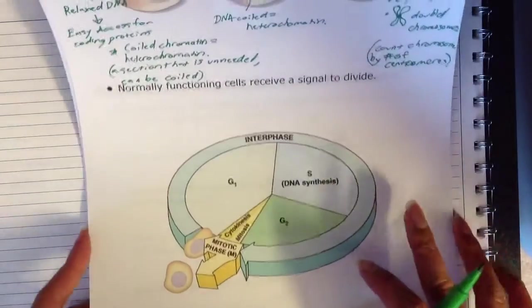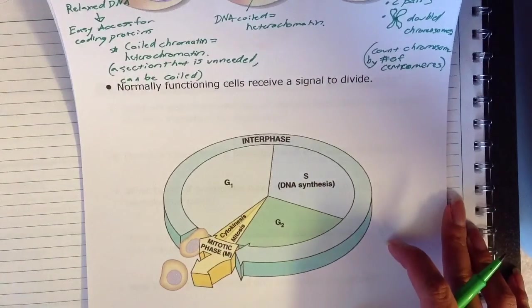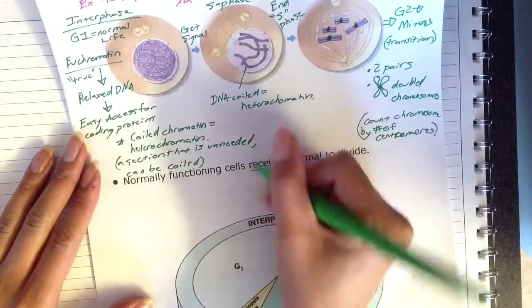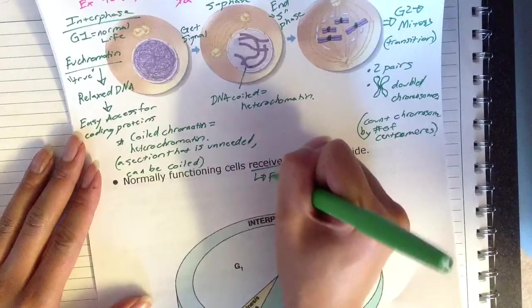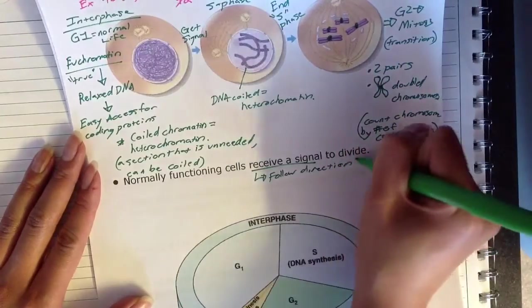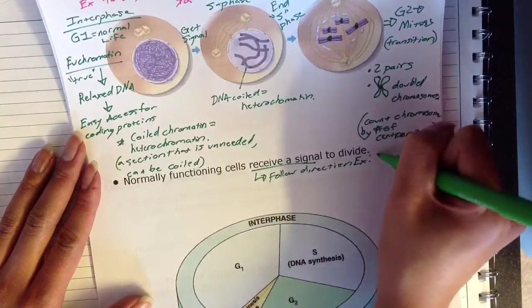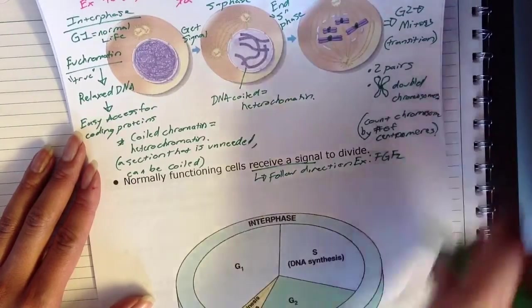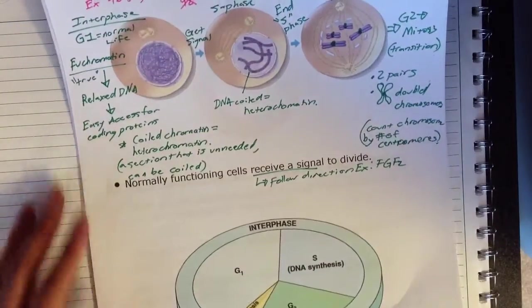And so here you have the normal functioning of a cell, and cells are all going to have to receive a signal to divide. So when you receive a signal to divide, basically, the cell is just going to follow directions, and a common example is going to be a signal known as FGF2. Common signal.